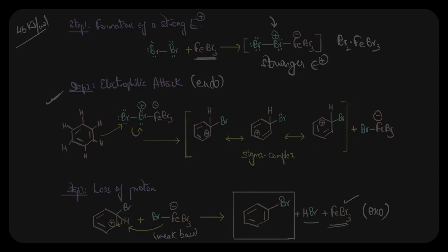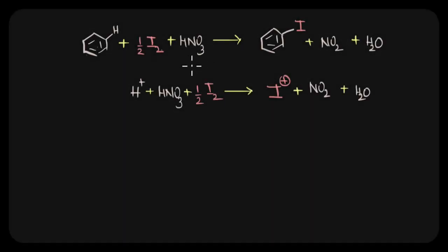Iodination of benzene or substituted benzenes requires the presence of an acidic oxidizing agent like nitric acid. This is because reactions with iodine are usually reversible and we need to oxidize iodine to generate the electrophile which is I+. Here nitric acid is not a catalyst but a reagent because it gets consumed in the reaction.